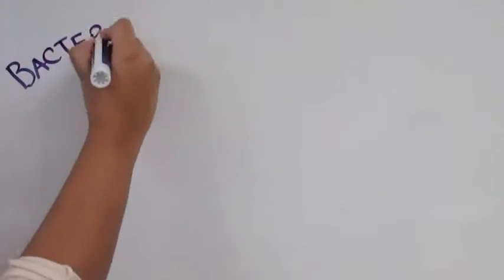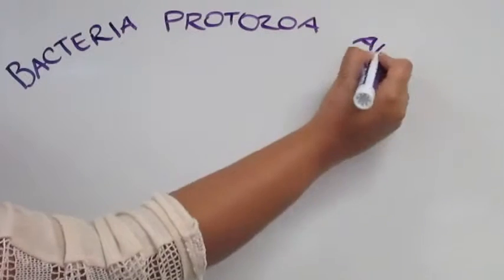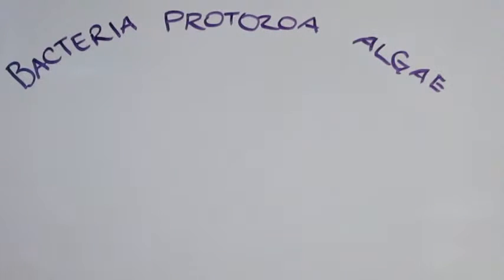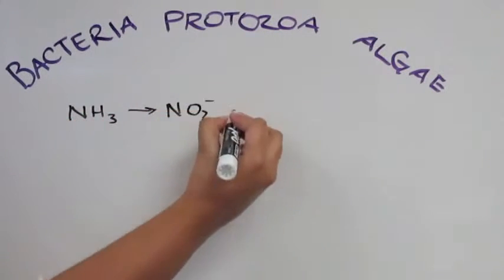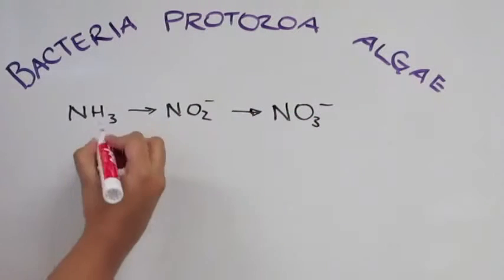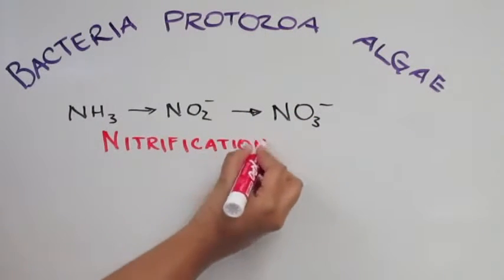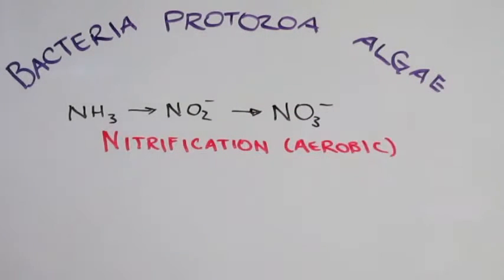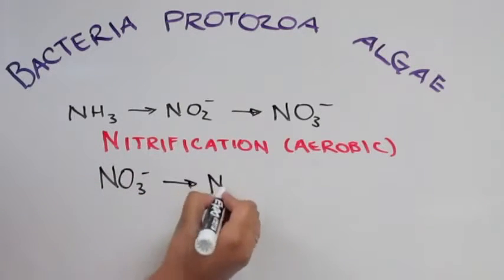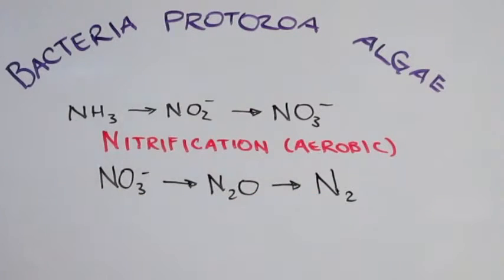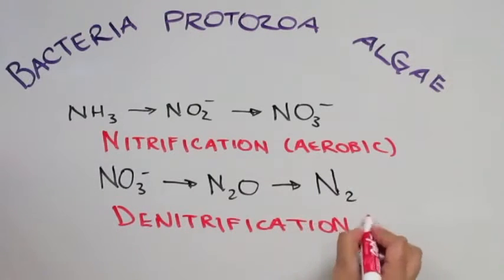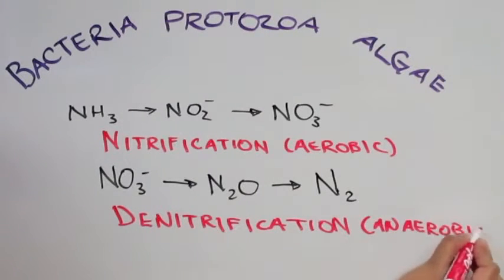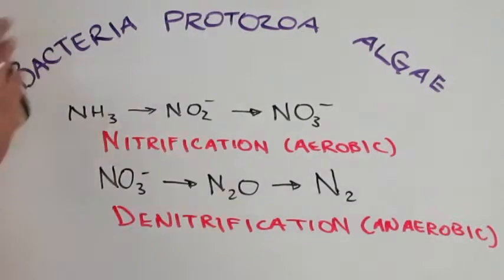Nutrient removal is important in wastewater treatment. Microorganisms such as bacteria, protozoa, and algae work both aerobically and anaerobically to remove dissolved contaminants and nutrients. For example, nitrogen removal is mainly done via nitrification and denitrification processes in which the ammonia is oxidized to nitrate by nitrifying bacteria under aerobic conditions and nitrates are broken down into nitrogen gas under anaerobic conditions. In this way, excess nitrogen levels in wastewater can be managed.